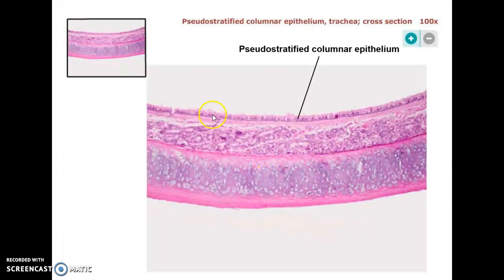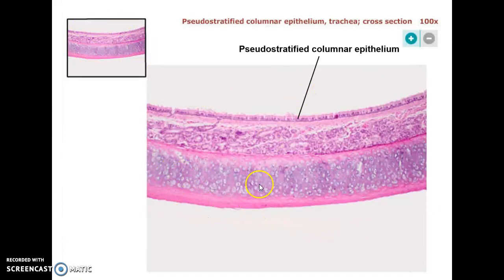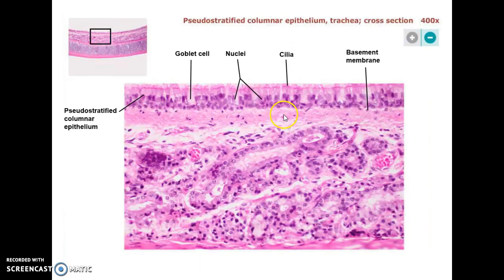This is now the wall of the trachea — we've cut across the trachea here. Air would be going in and out of the lungs through the interior of the trachea in this region. It's mostly cartilage down here, some fatty tissue that supports blood vessels, and then there's that pseudostratified columnar epithelium that lines the inside of the trachea.